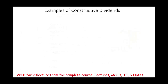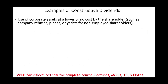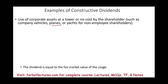Examples of constructive dividend: the use of a corporate asset at a lower or no cost to the shareholder, such as using the company vehicle, planes, or similar assets for non-employee shareholders. For example, you want to take your family on vacation and use the company's plane — it might cost $5,000 to fly there, but you're using the company plane for free. That's constructive dividend, with the dividend equal to the fair market value of the usage.